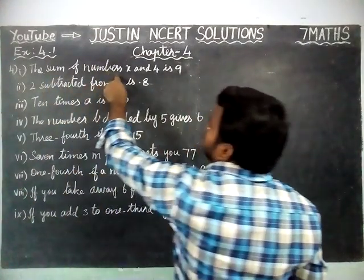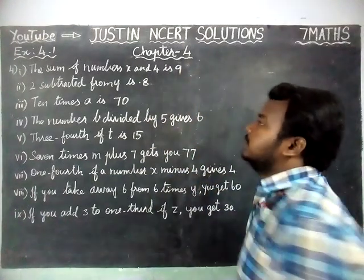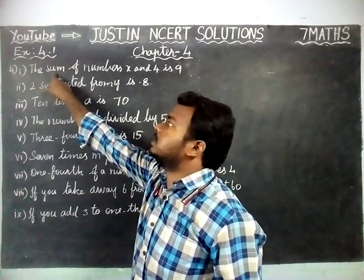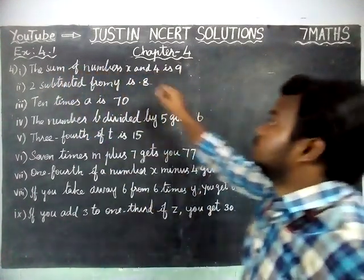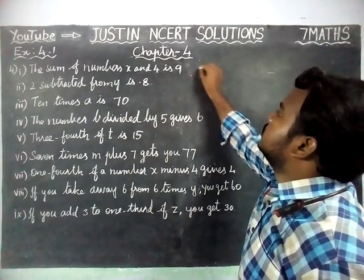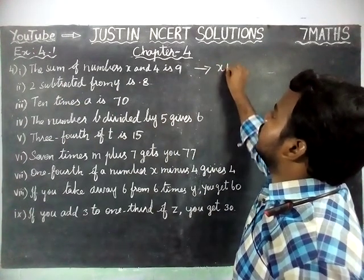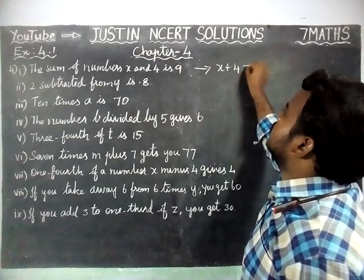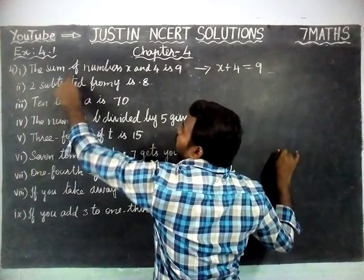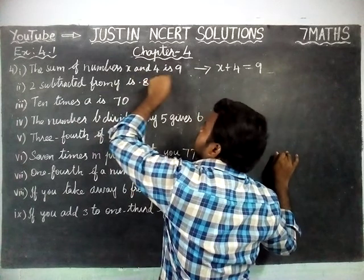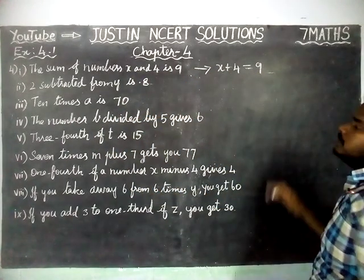The sum of numbers X and 4 is 9. We underline the word 'sum of' — so we have to add these two. This statement as an equation is: X plus 4 is equal to 9. Because the sum of numbers X and 4 is 9, so X + 4 = 9. This is the required equation.